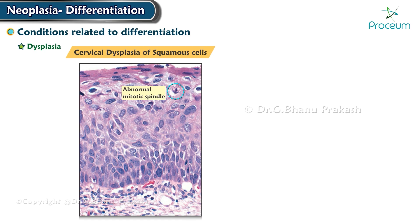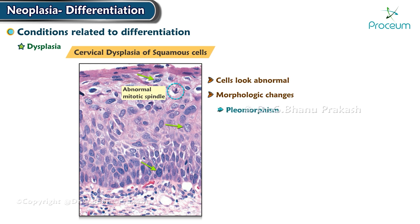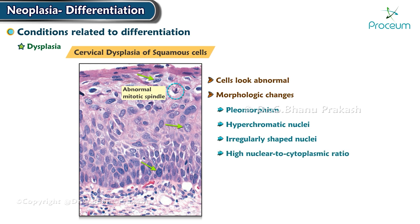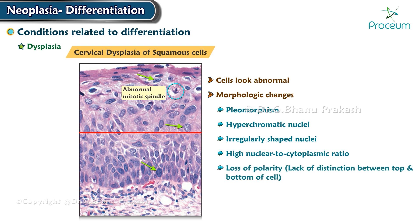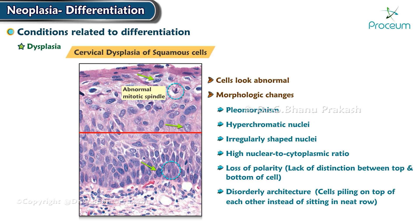The best example is cervical dysplasia of squamous cells. Dysplastic cells look abnormal and can show various morphologic changes including pleomorphism, hyperchromatic nuclei, irregularly shaped nuclei, high nuclear to cytoplasmic ratio, loss of polarity, lack of distinction between the top and bottom of the cell, and disorderly architecture — for example, cells piling on top of each other instead of sitting in a neat row.